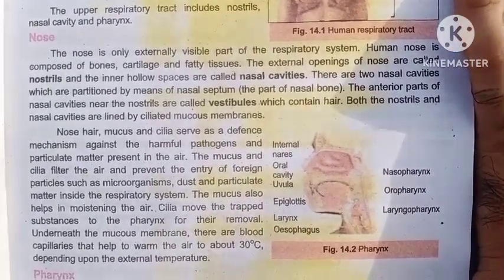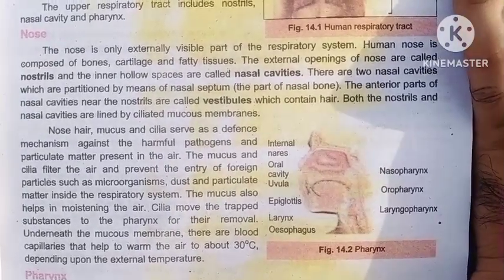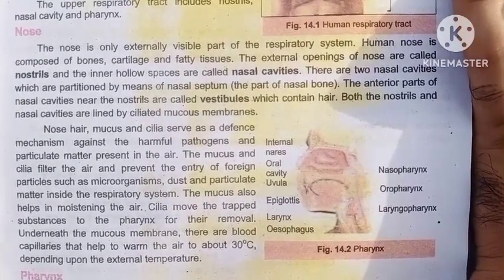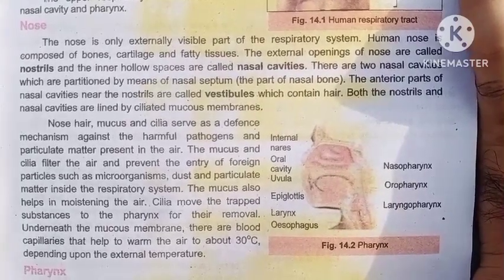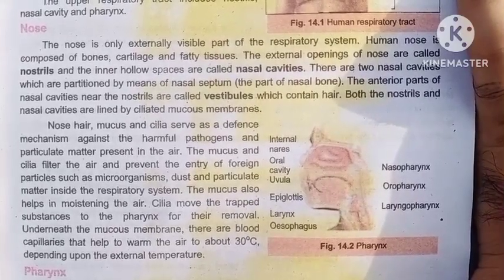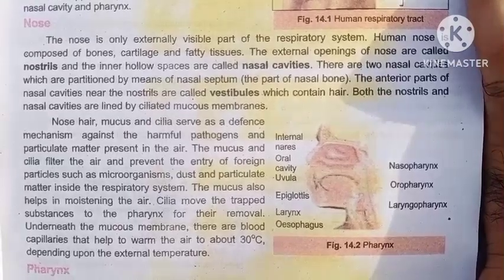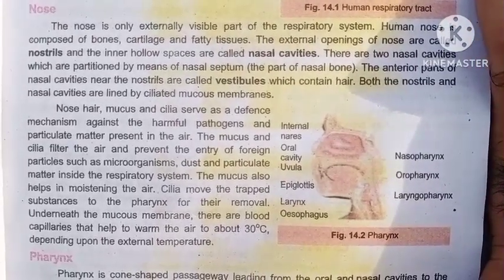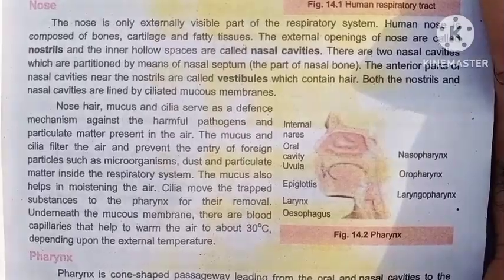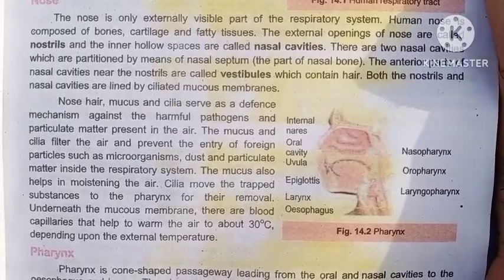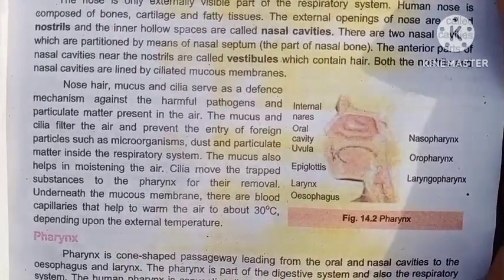Internal structures include the nasal cavity, oral cavity, uvula, epiglottis, nasopharynx, oropharynx, and laryngopharynx. The pharynx has different types which we discuss here. In the nose, mucous and cilia serve as the defense mechanism against harmful pathogens and particulate matter present in the air.